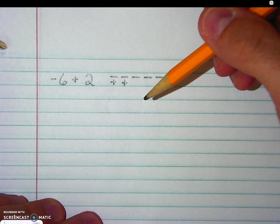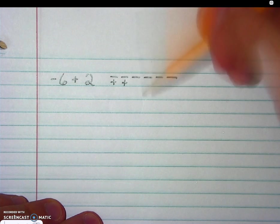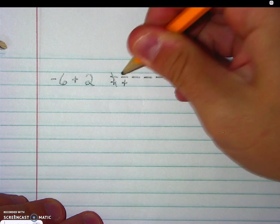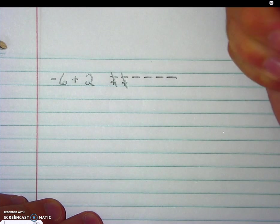So I'm going to show that a negative 1 and a positive 1 cancels each other out by putting markings through them like so.